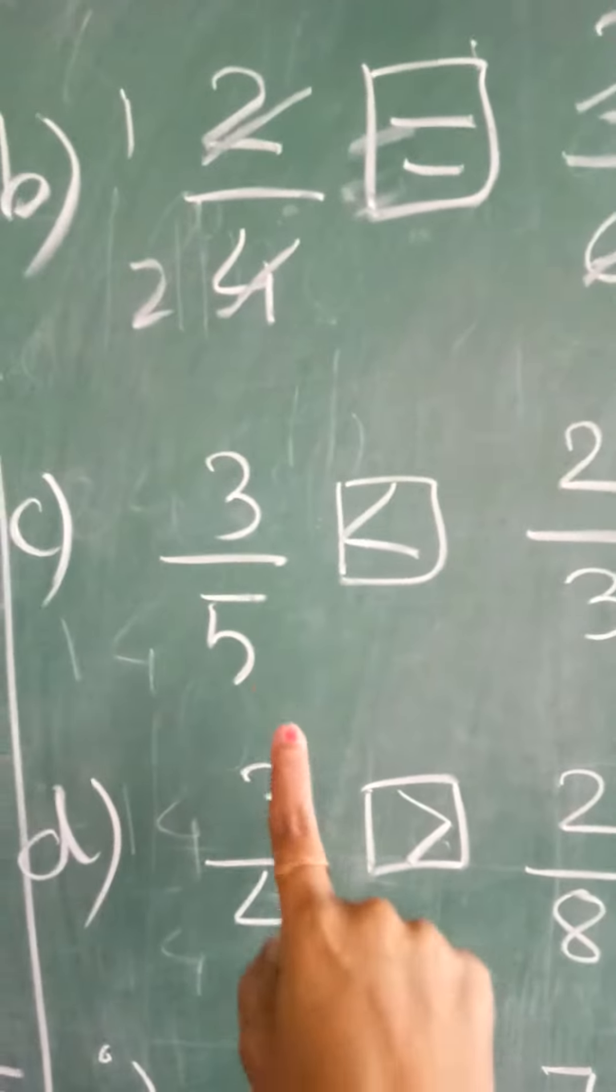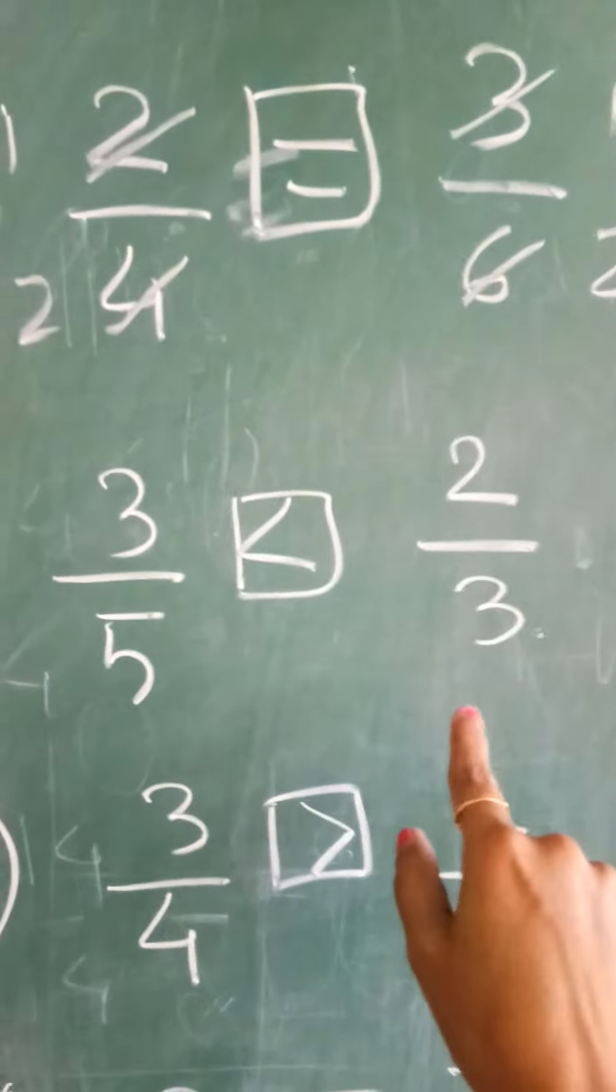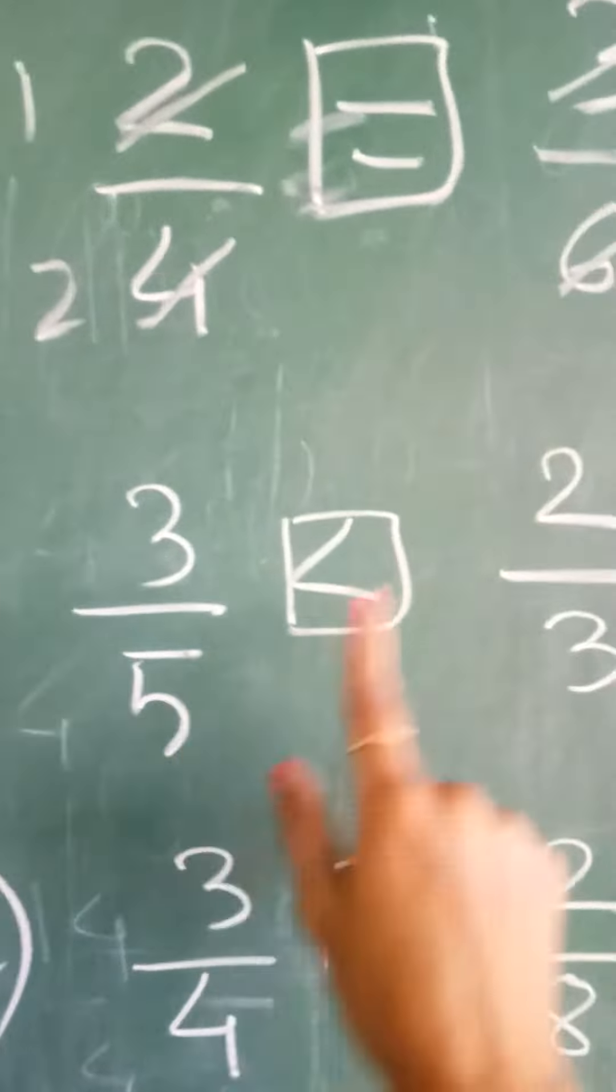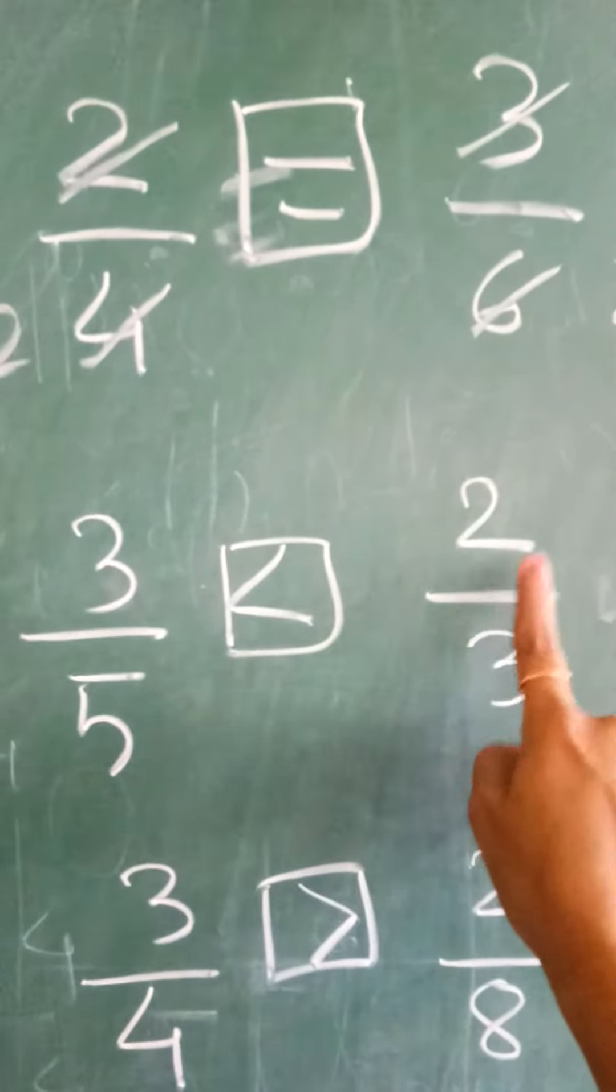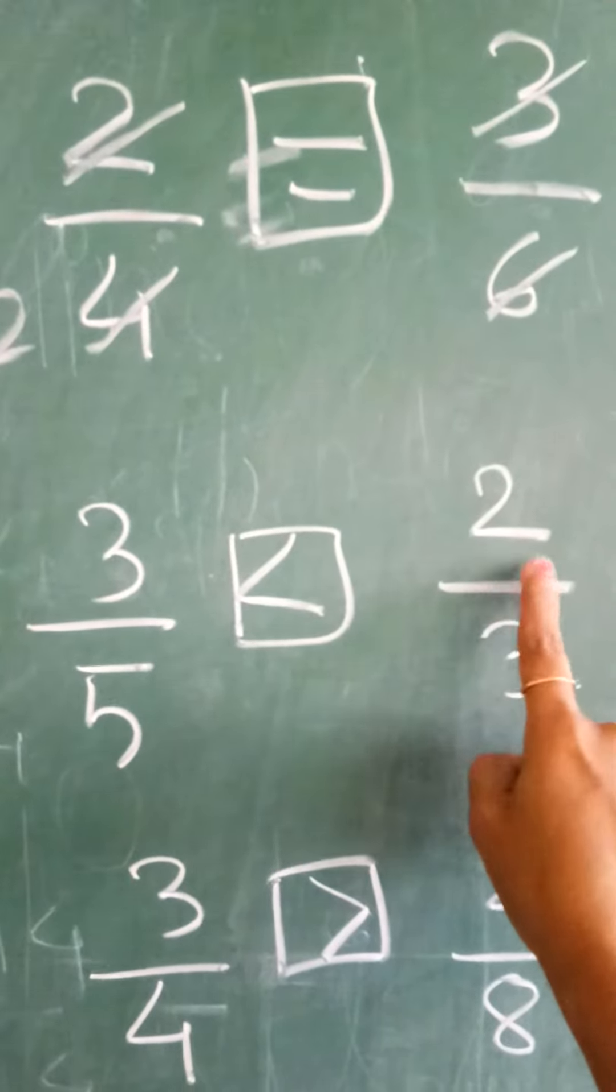Then next, 3 upon 5, 2 upon 3. Cross multiply: 3 threes are 9, 5 twos are 10. 10 is on this side, so this side is greater.